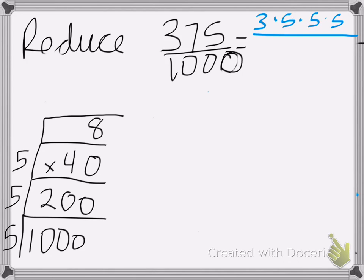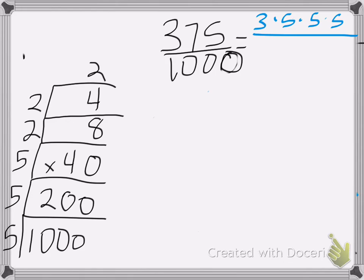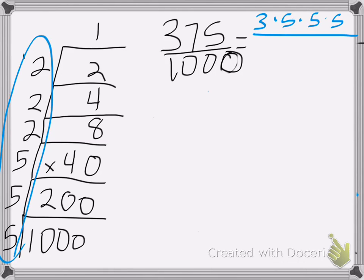Divide that by 2. Remember, you have to divide by primes, so I cannot divide by 4. 8 divided by 2 is 4. Divide that by 2 — 4 divided by 2 is 2. Then divide again — 2 divided by 2 is 1. So my prime factorization of 1,000 is 2 times 2 times 2 times 5 times 5 times 5.